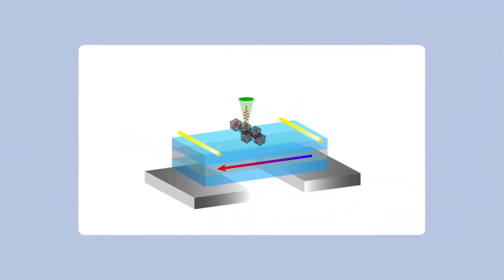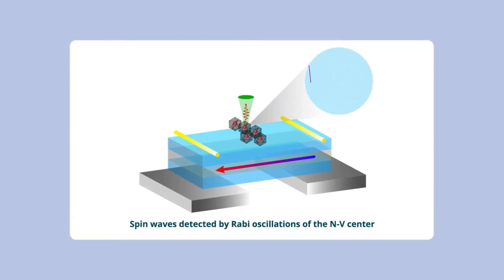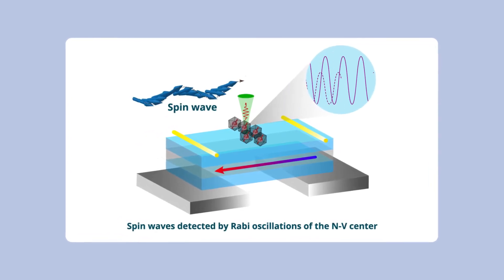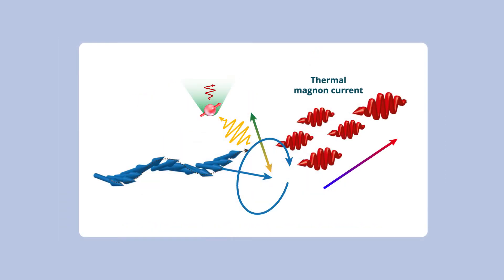Although NV centers cannot interact directly with the high-energy thermal magnons, they can detect low-energy spin waves via NV's quantum Rabi oscillations. As it turns out, the current produced by the thermal magnons exert a torque on the low-energy spin waves, and these changes are subsequently picked up by the NV centers.